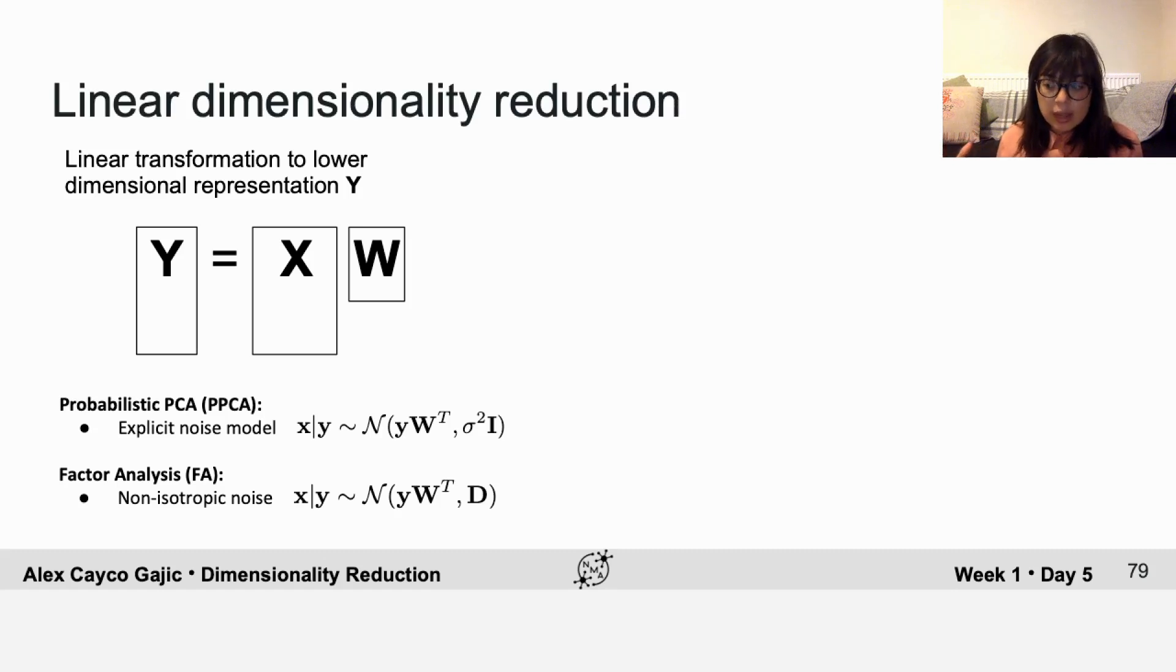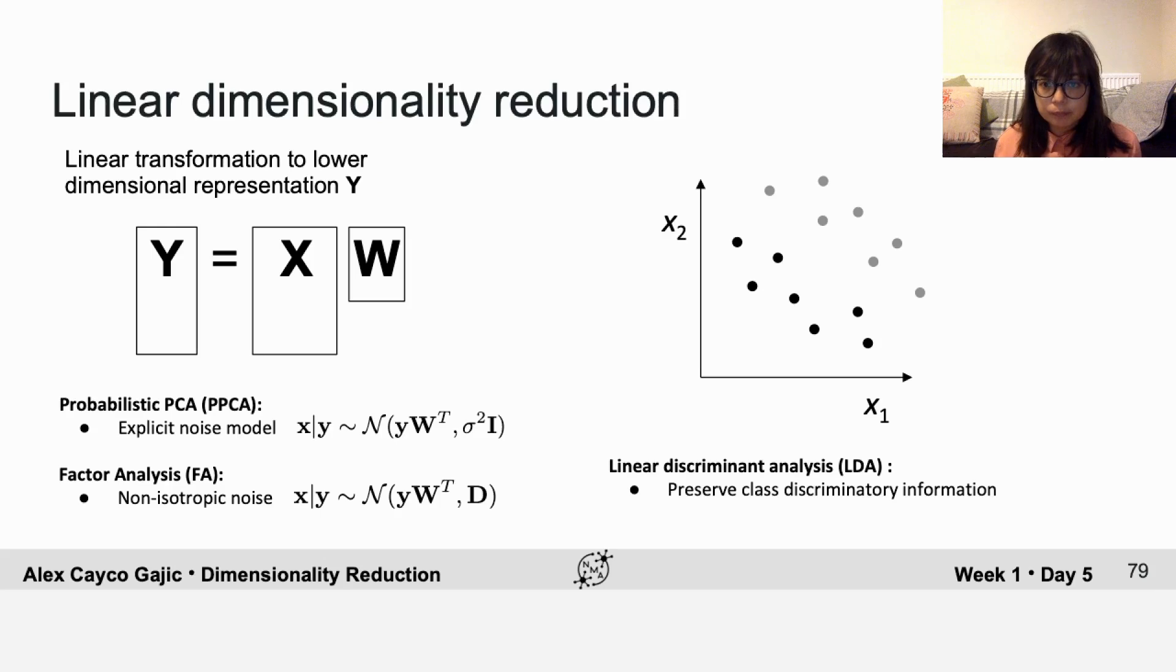Different methods can also have different features of the data that they're looking for. For example, linear discriminant analysis looks for a low dimensional subspace that preserves class discriminatory information. This is useful when you have labeled data and it's an example of supervised dimensionality reduction, in contrast to PCA or the other methods that I'm talking about today, which are unsupervised.